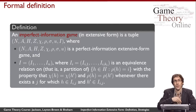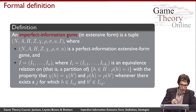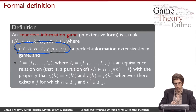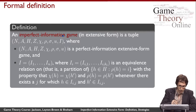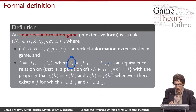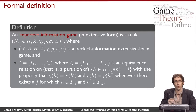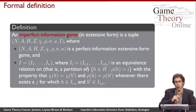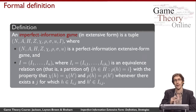To formally define an imperfect information extensive form game, we start with a perfect information extensive form game and add equivalence classes. We add this element I, which is a set of equivalence classes — one set for every player. For player i, we have equivalence classes numbered from one to k sub i. Each class contains one or more choice nodes that the player isn't able to tell apart. If every class contains only one node, we're back to the perfect information case; if any class contains more than one, we have a game where the player doesn't fully know what's going on.